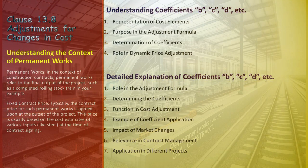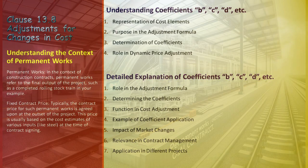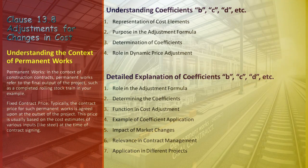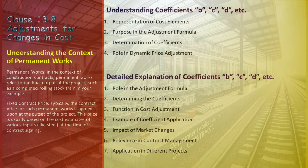Correctly setting these coefficients is vital for both parties to ensure that the contract price adjustment accurately reflects real cost dynamics and risk distribution. The specific values of B, C, and D can vary greatly depending on the project's nature, location, duration, and prevailing market conditions, making their accurate determination crucial for each project.